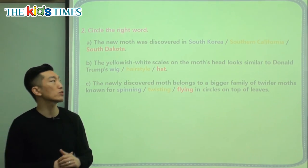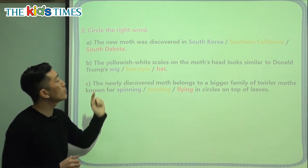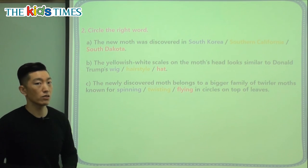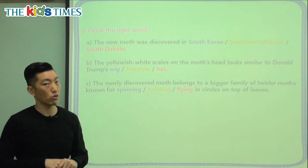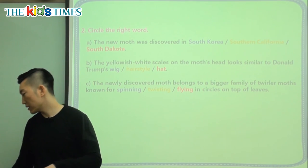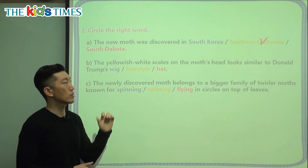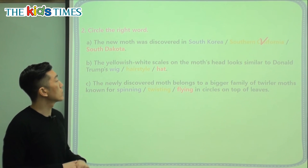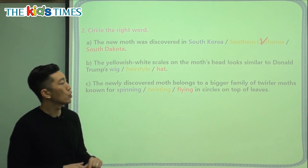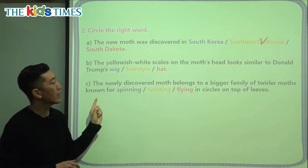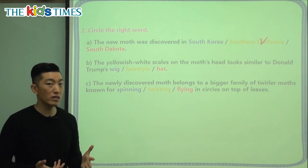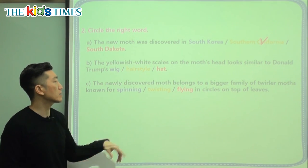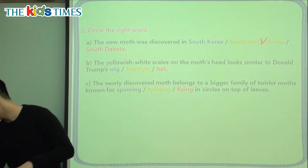Let's circle the correct answers. The new moth was discovered in South Korea, Southern California, or South Dakota. We know the article wasn't talking about South Korea, and we said it's in Southern California — the southern part of California, where you find San Diego and Los Angeles. The yellowish white scales on the moth's head look similar to Donald Trump's wig, hairstyle, or hat? Some people think Trump wears a wig, but that wasn't in our article, and Trump doesn't really wear hats, so the correct answer is his hairstyle.